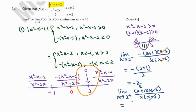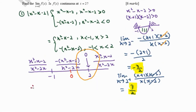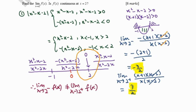Substituting x equals 2, the left-hand limit gives (2 + 1) over 2, which equals negative 3 over 2. The right-hand limit gives 3 over 2. The left-hand limit and right-hand limit are different values — they are not the same. Since the limit approaching 2 from the left is not equal to the limit approaching 2 from the right, therefore the limit as x approaches 2 does not exist.